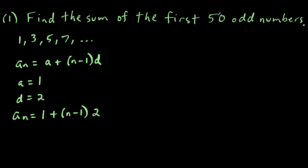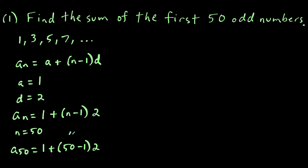We want to find the sum of the first 50 odd numbers, so we let n equal 50. The first thing we should find is what the 50th odd number is. We'd have one plus 50 minus one times two: 49 times two is 98, and 98 plus one is 99. So our list ends at 99 — all the odd numbers from one up to 99.